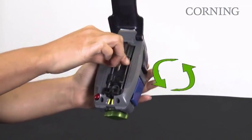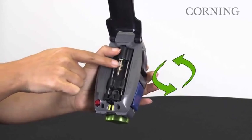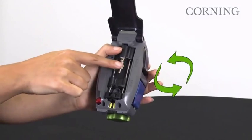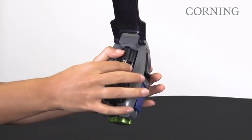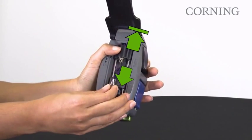Rotate the ridged portion of the ferrule adapter counterclockwise to loosen it. Using your thumb, secure the VFL coupler and pull the ferrule adapter away. Slight resistance is normal.